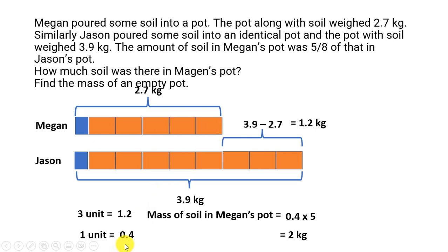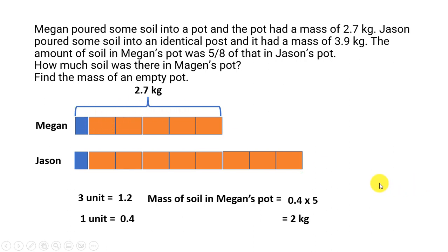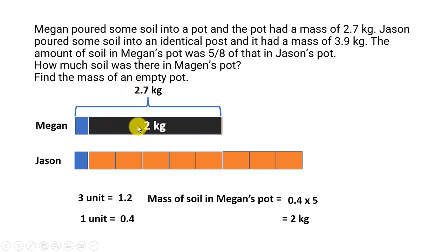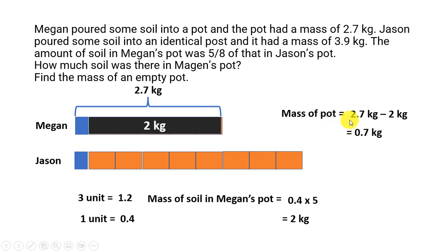So 0.4 times 5 gives us 2 kilograms. We see that the soil in Megan's pot is 2 kilograms, and the total is 2.7 kilograms. This 2 kilograms is the soil, and the remaining is the pot's mass. So the mass of the pot is equal to 2.7 kilograms minus 2 kilograms, which is equal to 0.7 kilograms.